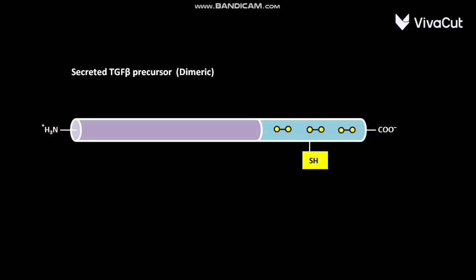The secreted TGF beta precursor has a pro domain. The pro domain is often called LAP or latency associated peptide. The pro domain consists of 50 to 375 amino acids.